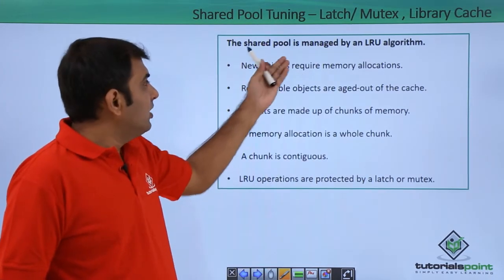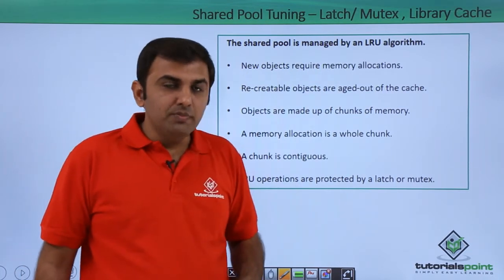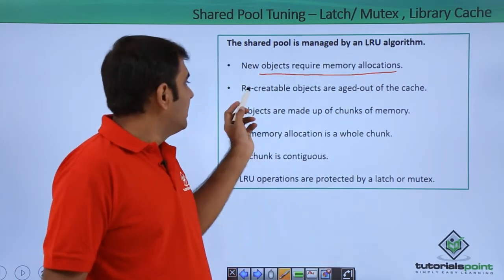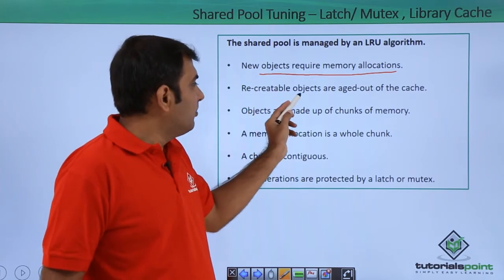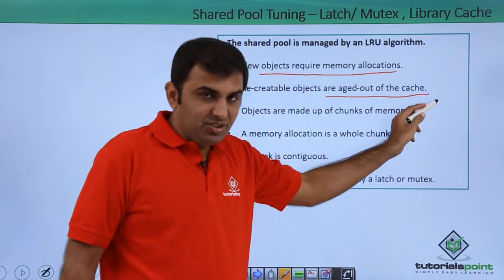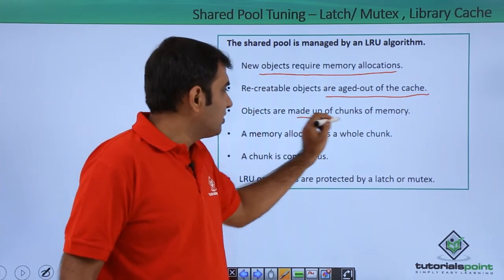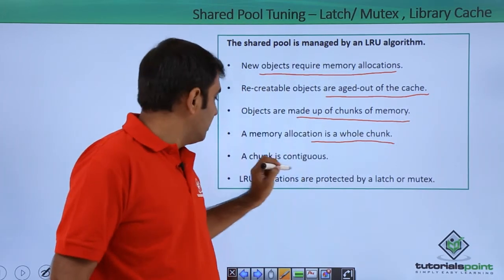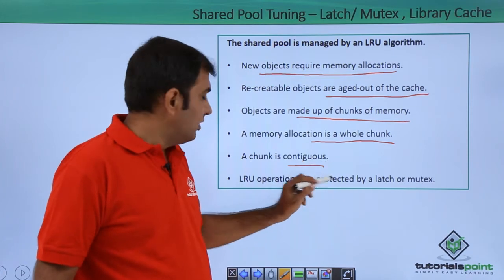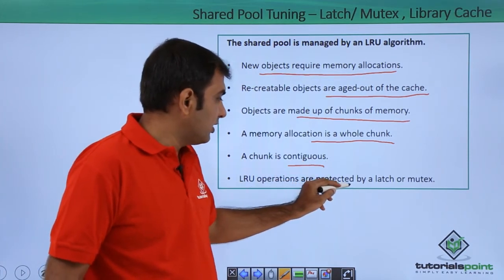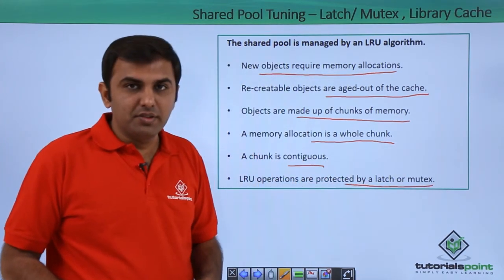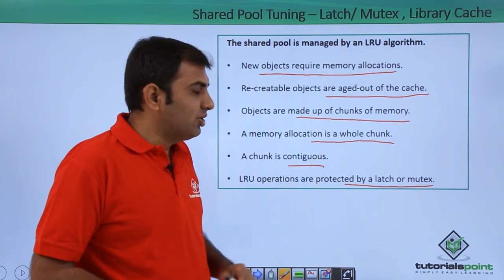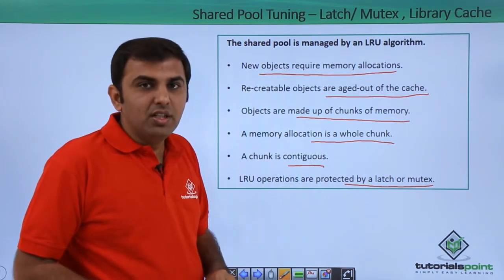The shared pool is managed by the LRU algorithm. New objects requiring memory allocation cause recreatable objects to be aged out from the cache. Objects are made up of chunks of memory, and memory is allocated in whole chunks. The chunk is contiguous, and LRU operations are protected by latch or mutex.